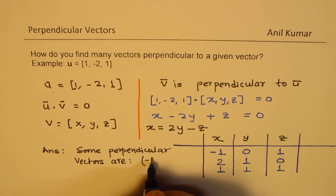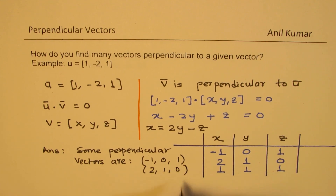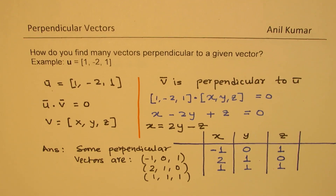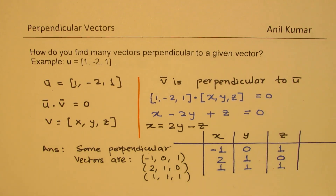So our answer — some perpendicular vectors are: (-1, 0, 1), (2, 1, 0), and (1, 1, 1). Note that we avoided (0, 0, 0), because for a zero vector, direction is not really certain — there is ambiguity about the direction of a zero vector, so always avoid that. This is a way in which you can find infinite solutions, showing that there could be infinite vectors perpendicular to a given vector.